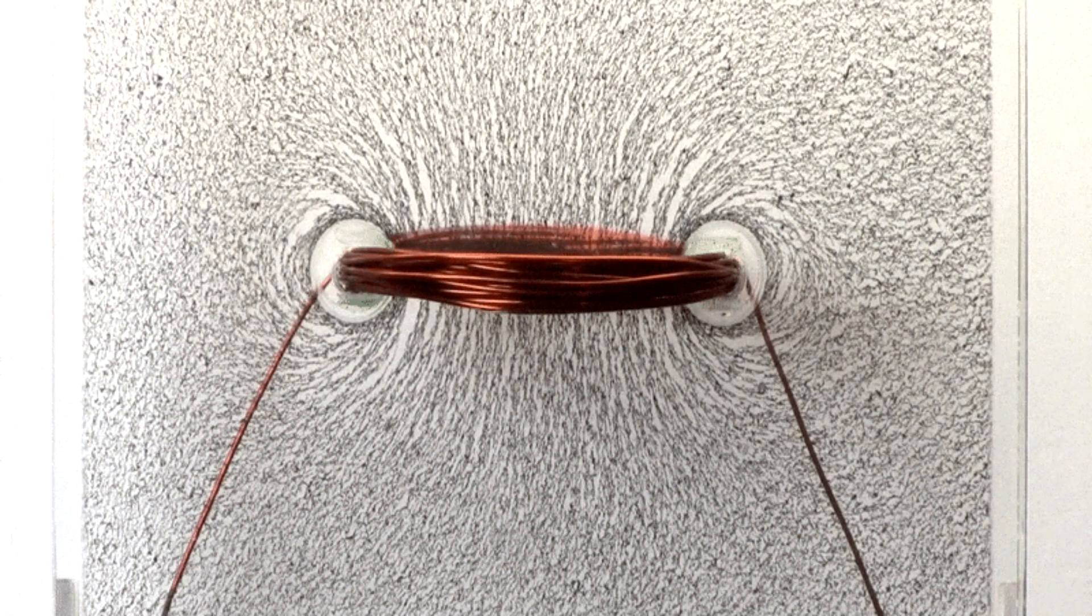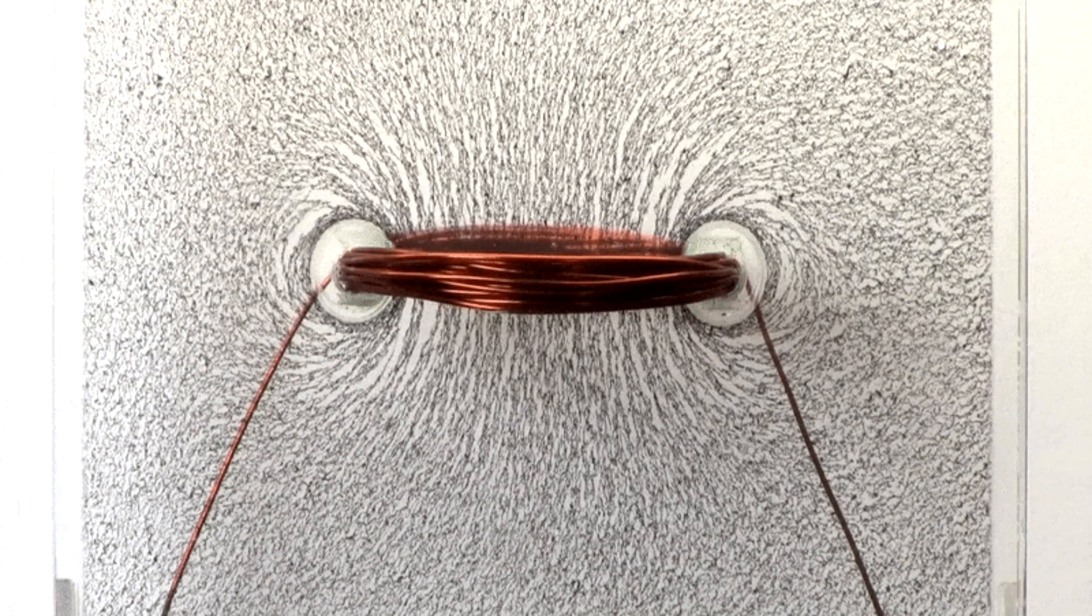Wow, that's beautiful. What do we see? The iron filings are aligned along magnetic field lines. We see that at the center of the loop we have straight lines and as we go to the side, the lines are curved.